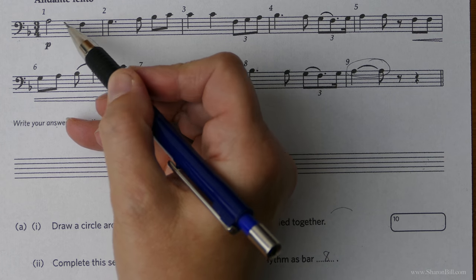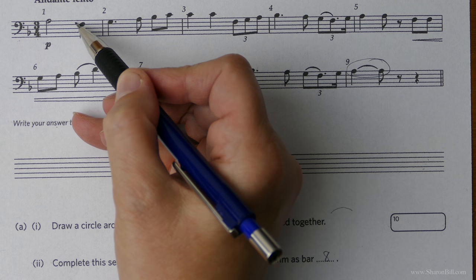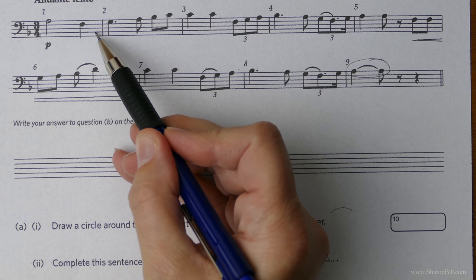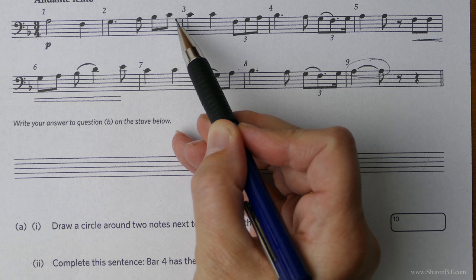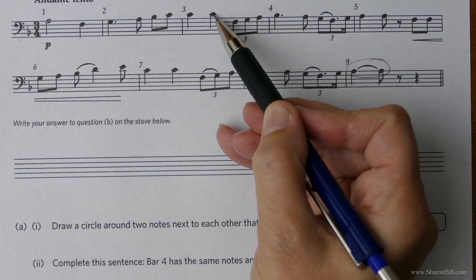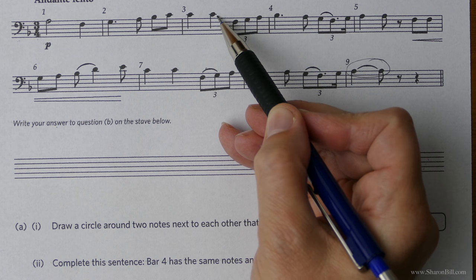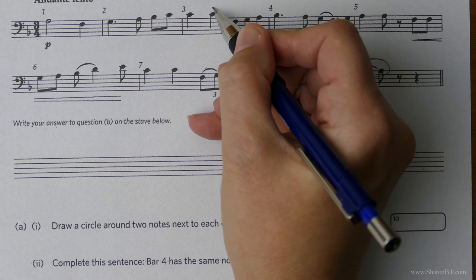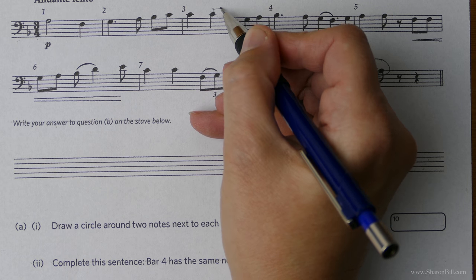So here that won't do because that's only one line, one, two, three. These are all going up in step, line, space, line, space. Exactly the same. So let's see what happens here. Here we've got line, line, line, one, two, three, four, five. There is our interval of a fifth.